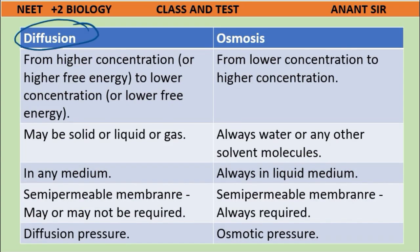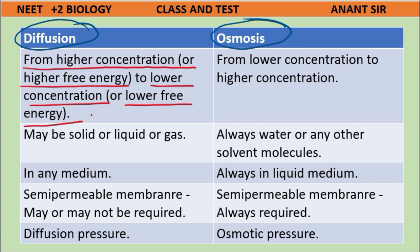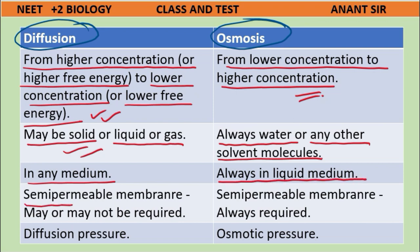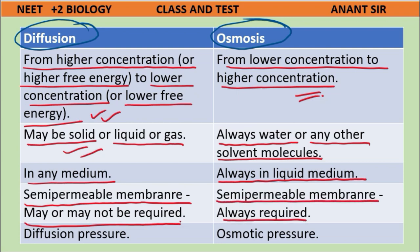Differences between diffusion and osmosis: Diffusion moves from higher to lower concentration/free energy; osmosis moves from lower to higher concentration. Diffusion may involve solids, liquids, or gases; osmosis always involves water or solvent molecules. Diffusion can occur in any medium; osmosis occurs only in liquid medium. A semi-permeable membrane may or may not be required for diffusion, but is always required for osmosis. Diffusion has diffusion pressure; osmosis has osmotic pressure.